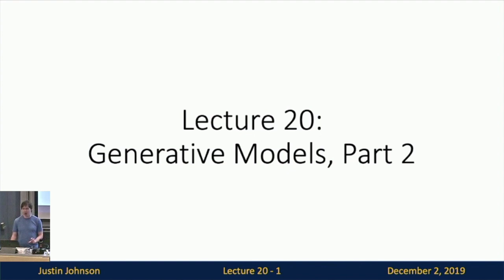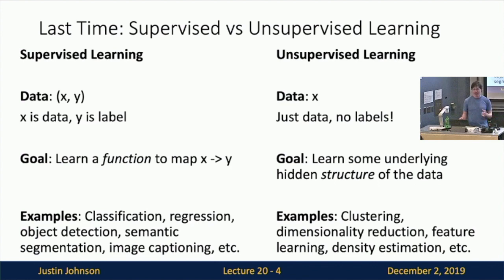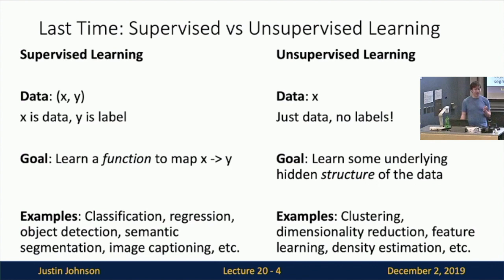Last time we started our discussion of generative models by recapping a couple of big distinctions in machine learning. One was the distinction between supervised learning and unsupervised learning. In supervised learning we have both the raw data X — like our image — as well as the label Y, which is the thing we want to predict. In supervised learning we learn some function that predicts the label from the image. This has been very successful and lets us solve a lot of different computer vision tasks.